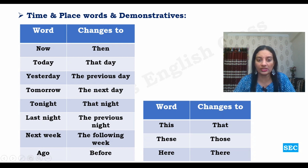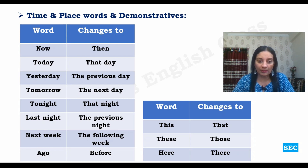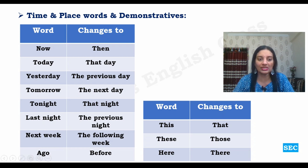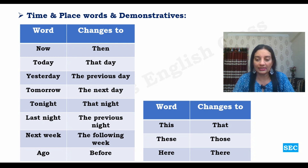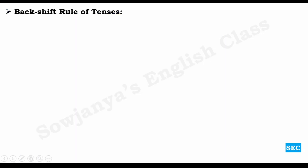These are the basic changes that happen in reported speech. Whenever we transform any direct speech sentence or passage into reported speech, these are the changes we need to keep in mind: pronoun changes, time and place words, and demonstratives. And one more important rule we are going to talk about now — the most important and most confusing rule of reported speech — the backshift rule of tenses.